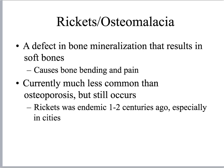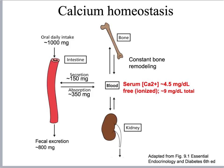Rickets and osteomalacia are caused by severe deficiencies in vitamin D. The prior epidemic of rickets was largely cured by supplementing milk with vitamin D. You should know that infants and young children who are exclusively breastfed are at increased risk for developing rickets. Now, let's talk about the normal physiology of calcium homeostasis.